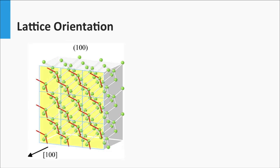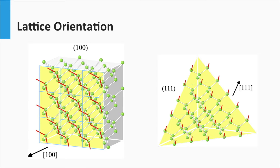We see two important surfaces. The first one is referred to as the 100 surface, and the normal of this plane points in the 100 direction. The silicon at the 100 surface always has two backbonds and two other valence electrons pointing to the front. The second surface is the 111 plane, characterized by three silicon backbonds and one valence electron pointing in the normal to the plane.